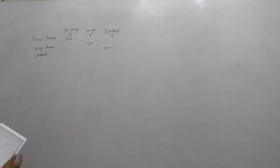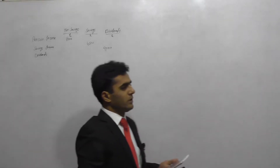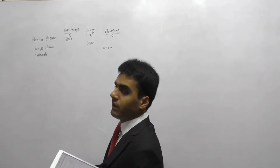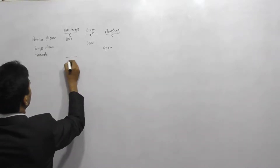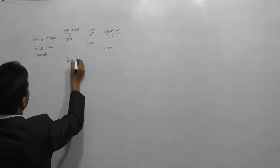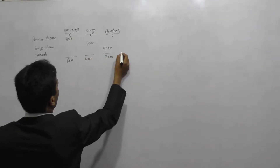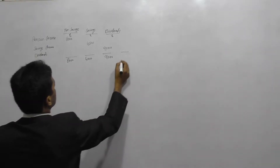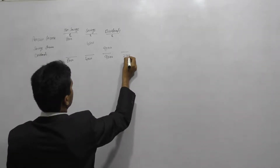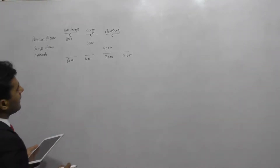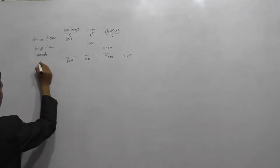Now he has three sources of income and we need to calculate his income tax liability. The normal way is to total all of these. Eight thousand plus four thousand five hundred plus nine thousand gives a total income of twenty-one thousand pounds.